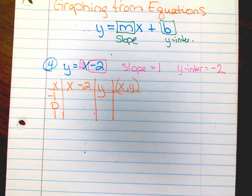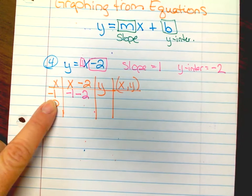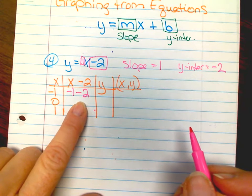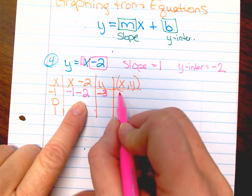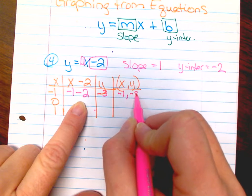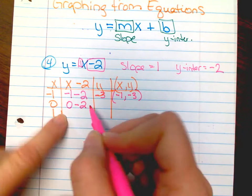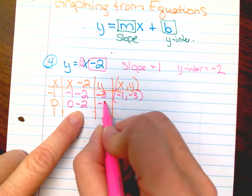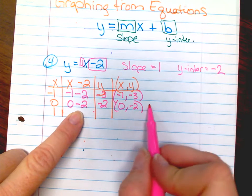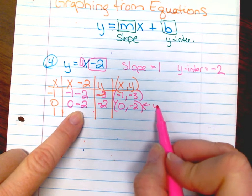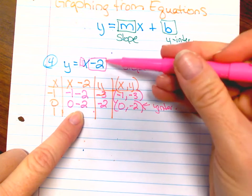This way we can have our plots and then you can graph. I'm going to substitute negative one in for x. Negative one minus two — remember your rules of integers — comes to negative three. So when x is negative one, y is negative three. If I substitute zero in for x, zero minus two would be negative two. This is your y-intercept: zero, negative two. And isn't that what we decided up here? It just kind of proved that this is your y-intercept.